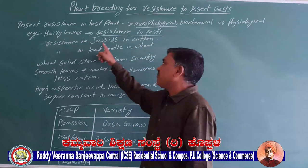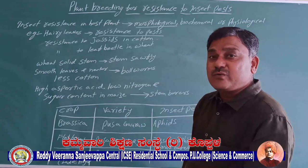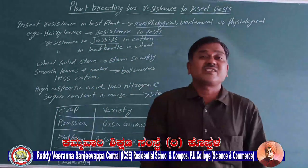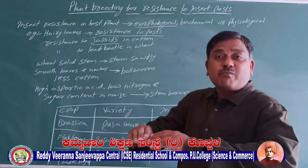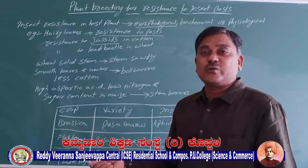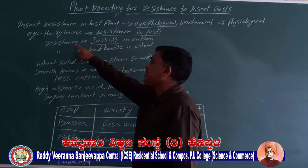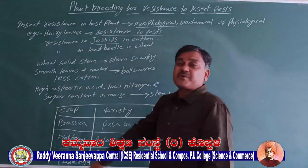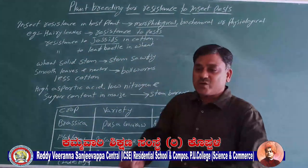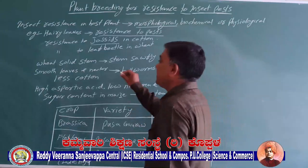Along with this, if we take the example of the cotton plant, the morphological character of cotton plant leaves makes it resistant to a special type of insect called jassids. The leaf morphology is such that jassids are unable to act on the cotton plant, so it becomes resistant to jassids. Similarly, long leaves of the wheat plant develop resistance to leaf aphids.